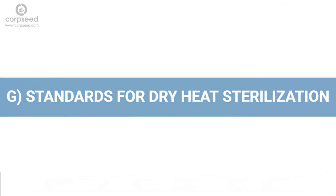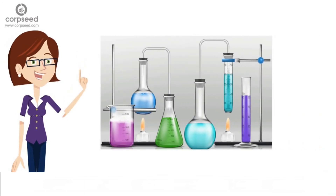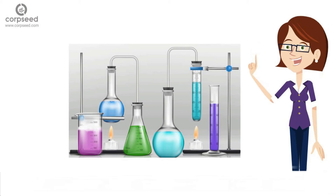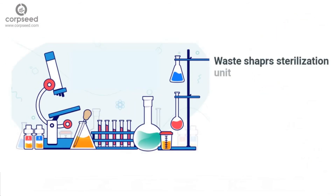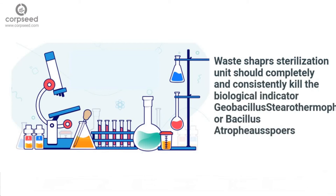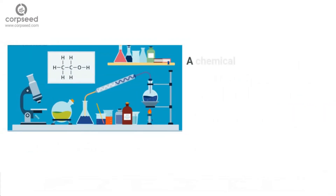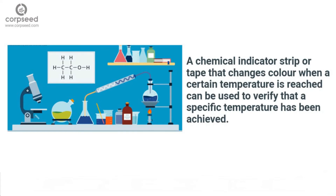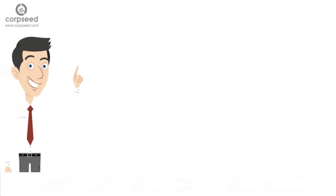Standards for Dry Heat Sterilization: Waste sharps can be treated by dry heat sterilization at a temperature not less than 185°C, for a residence period of at least 150 minutes per cycle, which includes a sterilization period of 90 minutes. There should be an automatic recording system to monitor operating parameters. The sterilization unit should completely and consistently kill Bacillus thermophilus or Bacillus atrophaeus spores using vials with at least log10-6 spores per milliliter. Tests shall be carried out once every 3 months. A chemical indicator strip or tape that changes color at a certain temperature can verify that temperature has been achieved; more than one strip may be used to ensure the inner content has been adequately disinfected. This test shall be performed once per week and records shall be maintained.